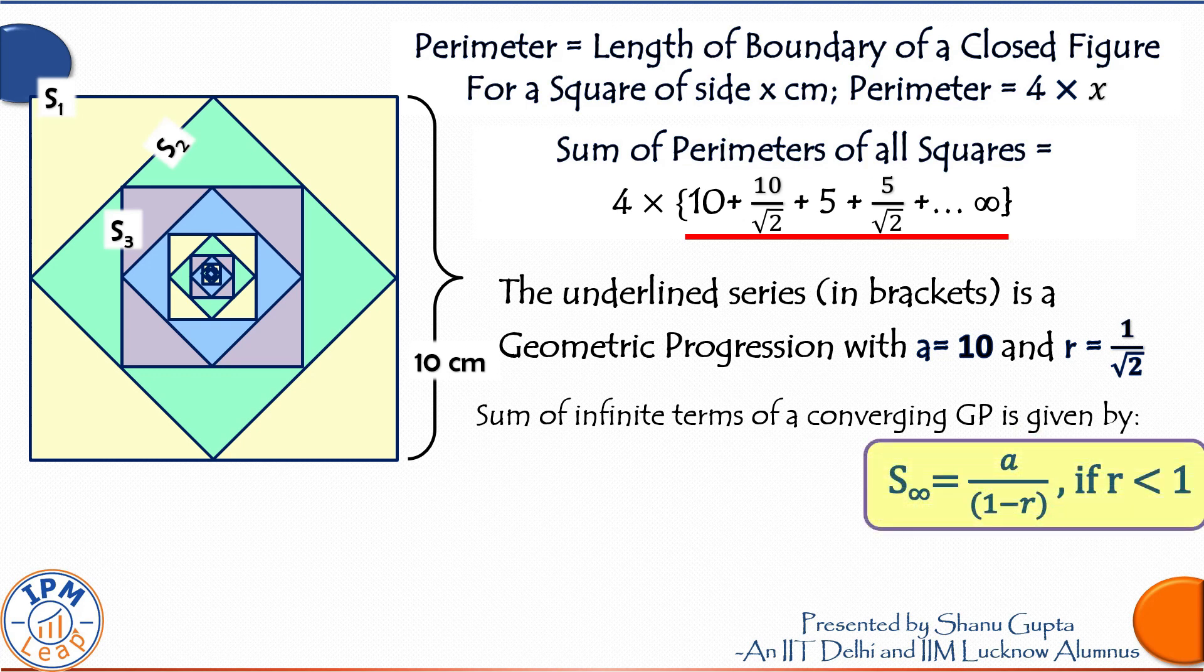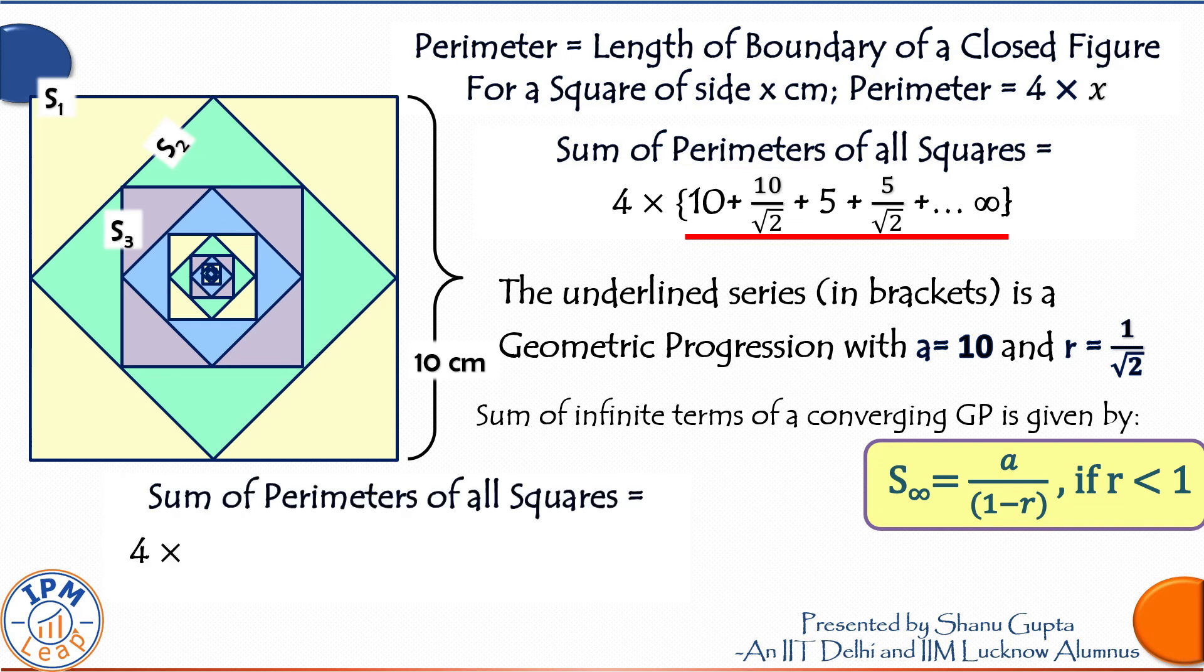Let us apply that. Sum of perimeters of all squares is equal to 4 into brackets a which is 10 upon 1 minus common ratio, which is the same as 1 minus 1 upon root 2.